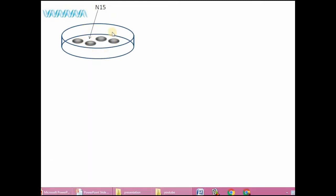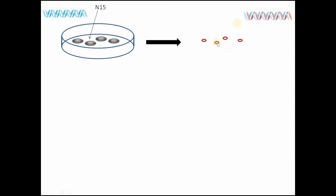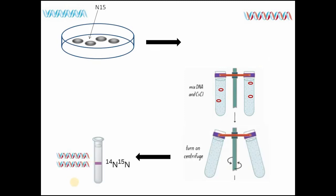The bacteria that had been growing in N-15 medium and had heavy nitrogen in their DNA were then transferred to a lighter N-14 medium. They were grown for one generation — bacteria divide approximately every 20 minutes. After about half an hour, DNA was extracted. This DNA was added to a cesium chloride test tube and centrifuged. After centrifugation, a band was found at an intermediate position — neither at the top nor at the bottom.